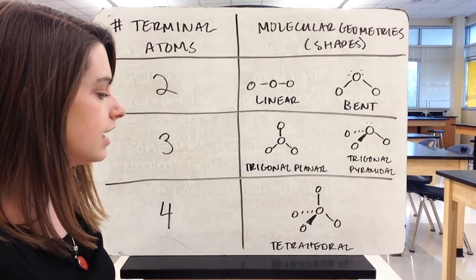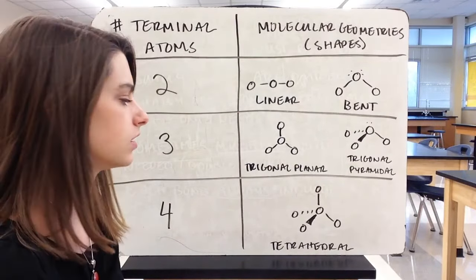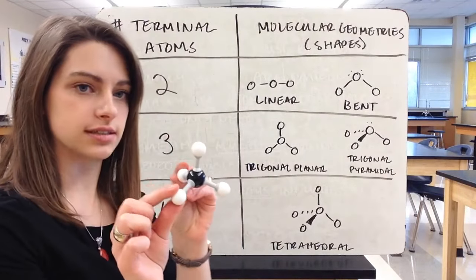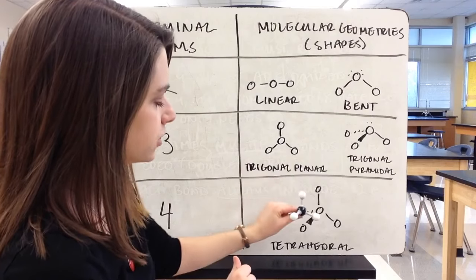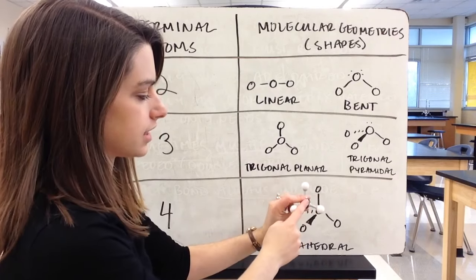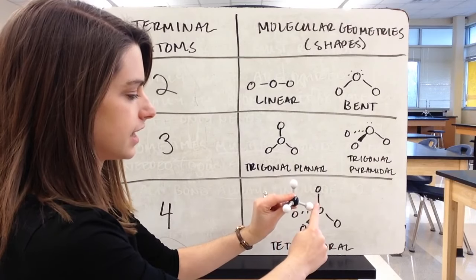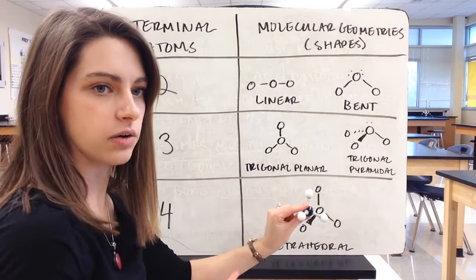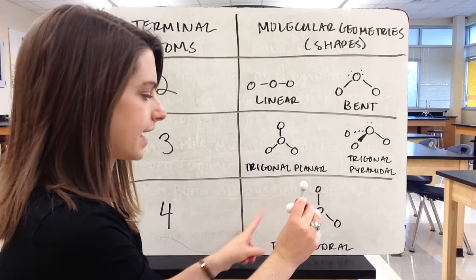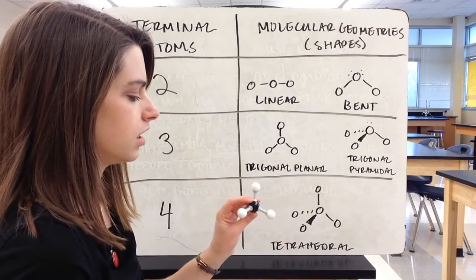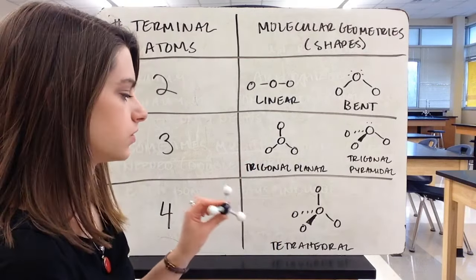The last shape is tetrahedral, when you have four terminal atoms around your central atom. This is like CH4. These two bonds are in the same plane with the board, this front one comes out towards you (drawn with a wedge), and this back one goes into the board (drawn with a dotted line). You always want to find two bonds that are in the plane of the board so you can draw those with straight lines.